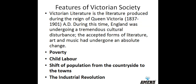Before we understand the relationship between Great Expectations and Victorian characteristics, it is recommended to understand the features of Victorian society. Victorian literature is the literature produced during the reign of Queen Victoria from 1837 to 1901 AD. During this time, England was undergoing a tremendous cultural disturbance. The accepted forms of literature, art, and music had undergone an absolute change. The following are the characteristics.